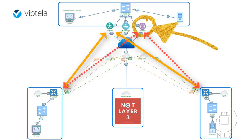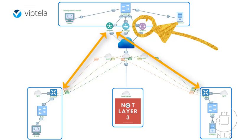The DTLS connection with vEdge routers are only temporary. Once the vBond orchestrator has matched a vEdge router with a vSmart controller, there is no need for the vBond orchestrator and the vEdge router to communicate with each other continuously. The vBond orchestrator shares only the information required for control plane connectivity, and it instructs the proper vEdge routers and vSmart controllers to initiate secure connectivity with each other over DTLS or TLS.